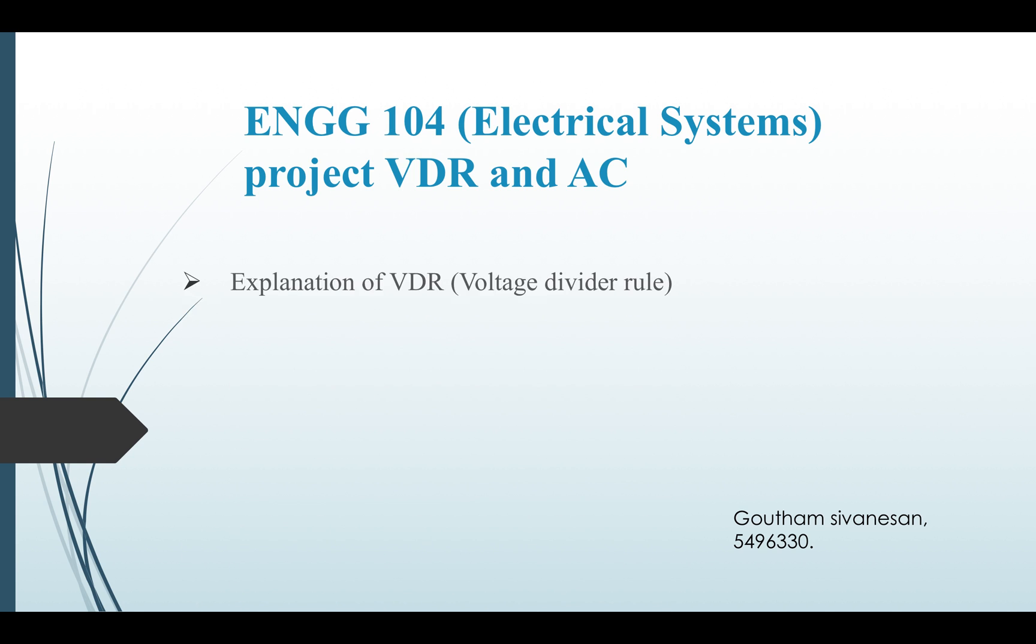First, explanation of VDR, followed by explanation of AC, and at last, conclusion. So here, VDR is defined to be voltage divider rule, and AC is alternating current. So let's go.